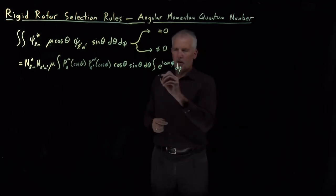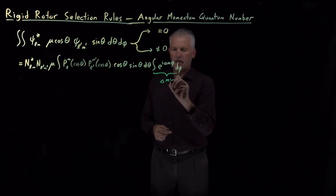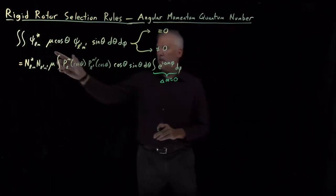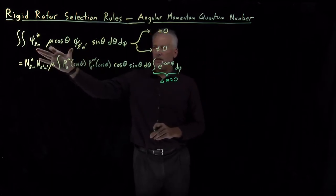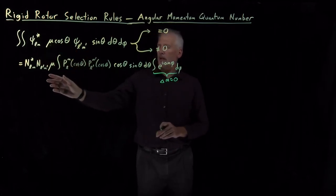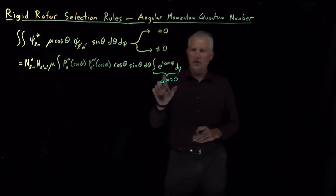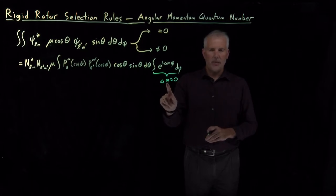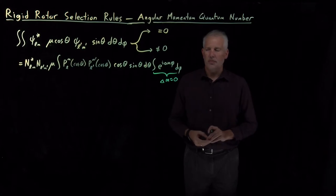So far we've determined that the phi portion of this integral, when we insert the rigid rotor wave functions, gives us terms that involve Legendre polynomials and e to the i m phi's. The phi portion tells us that the magnetic quantum number is not allowed to change if the molecule is to absorb electromagnetic radiation to change its rotational state.